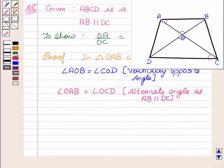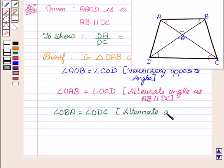Similarly, angle OBA is equal to angle ODC. These are also alternate angles as AB is parallel to DC. Therefore, angle OBA = angle ODC, alternate angles, as AB is parallel to DC.